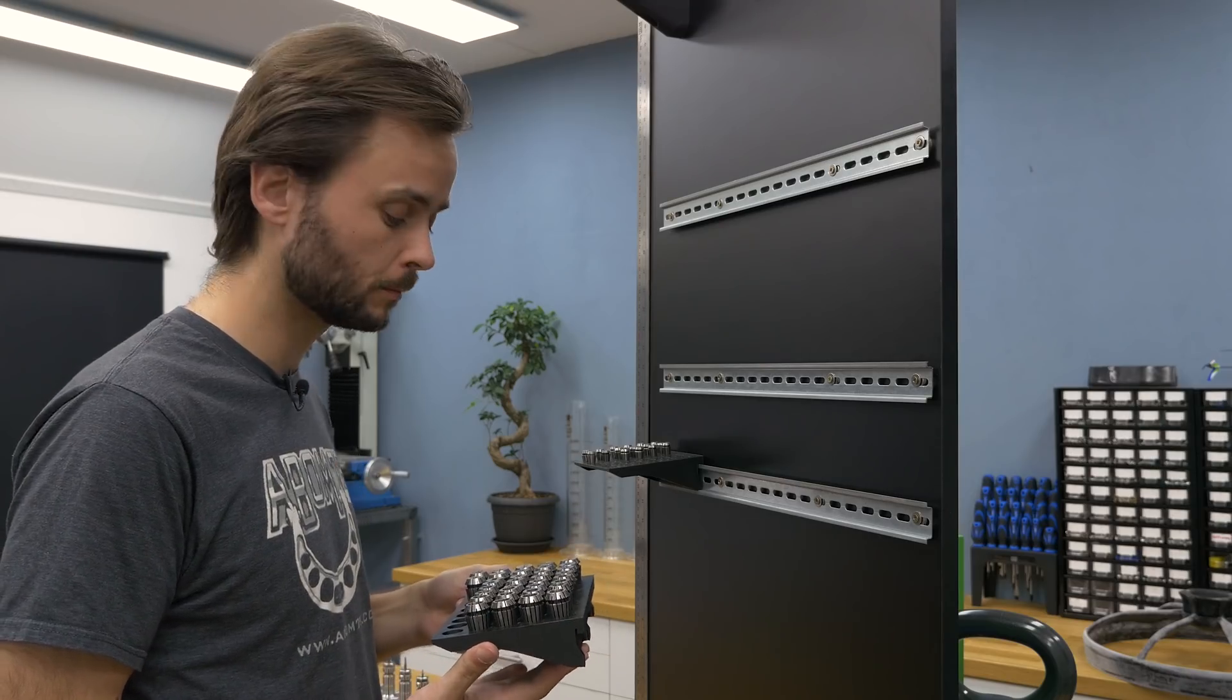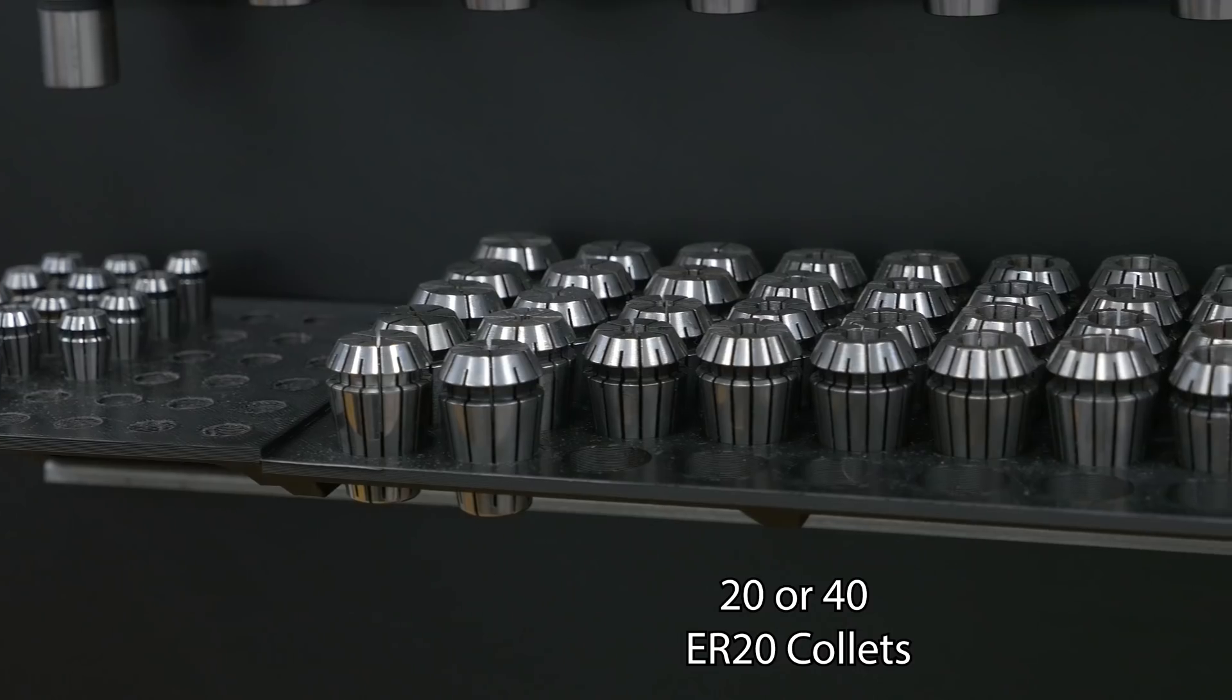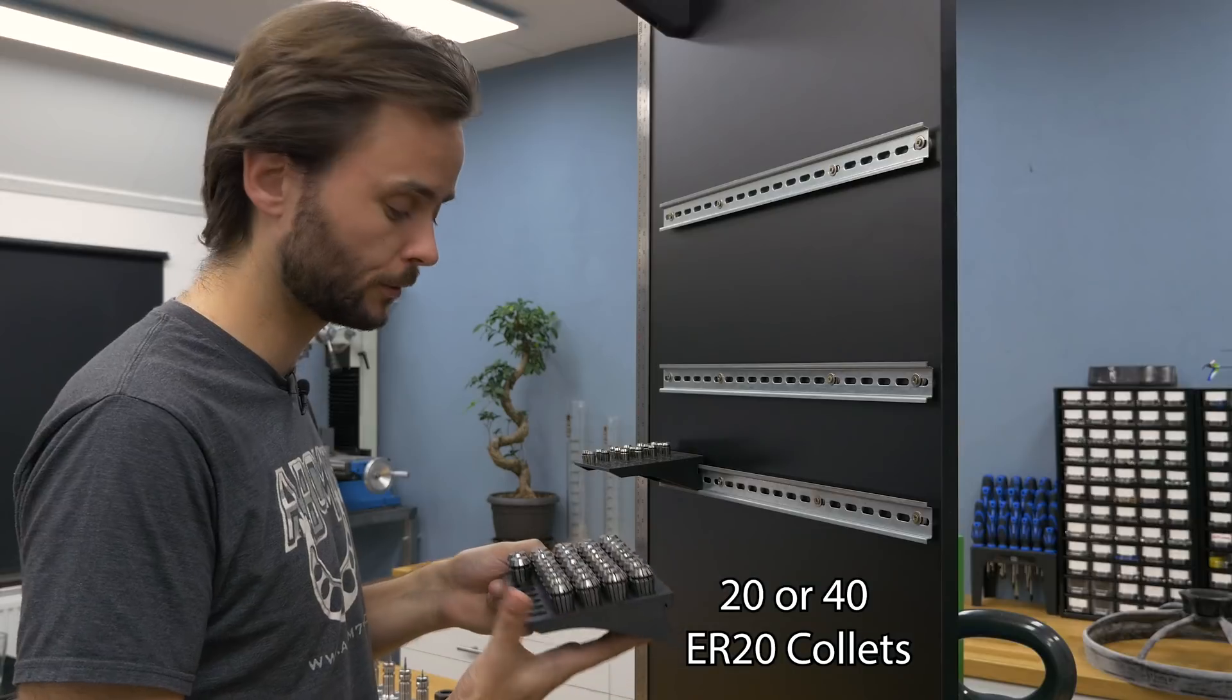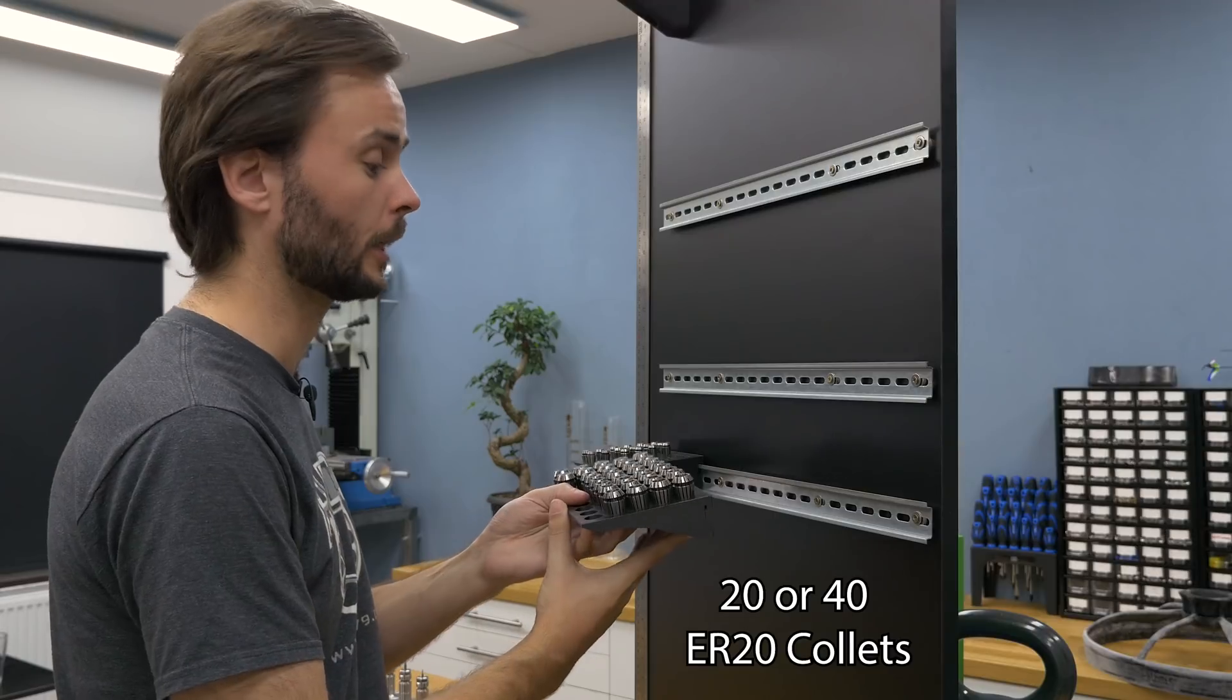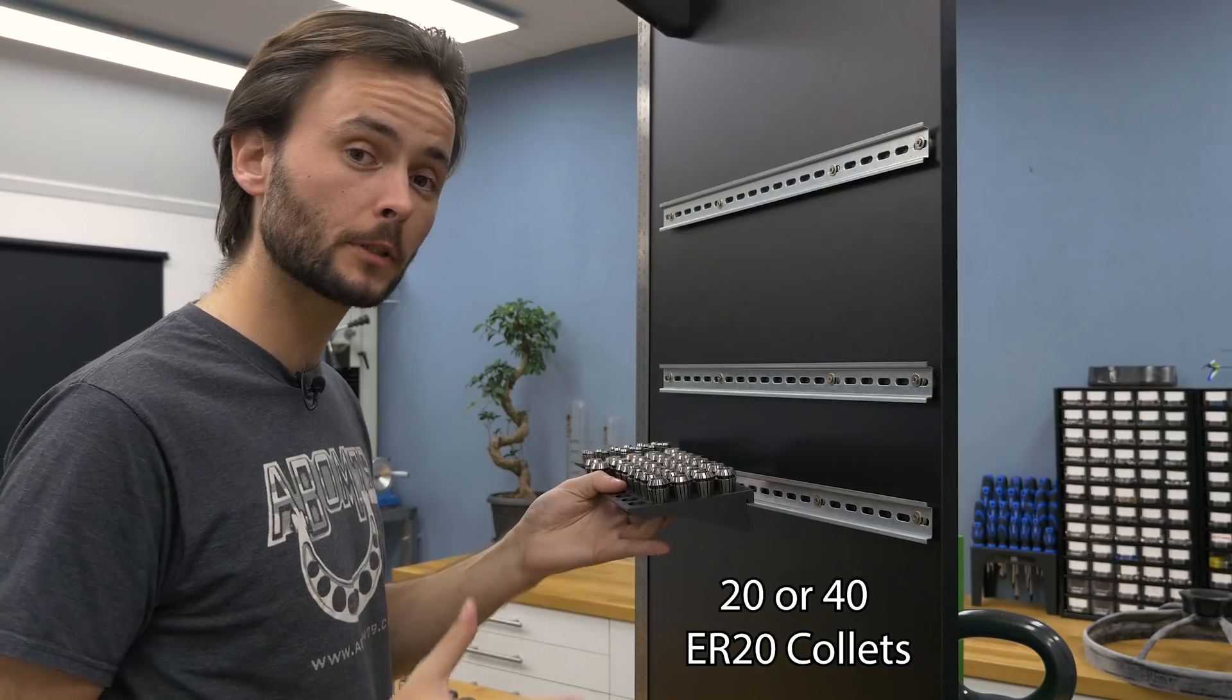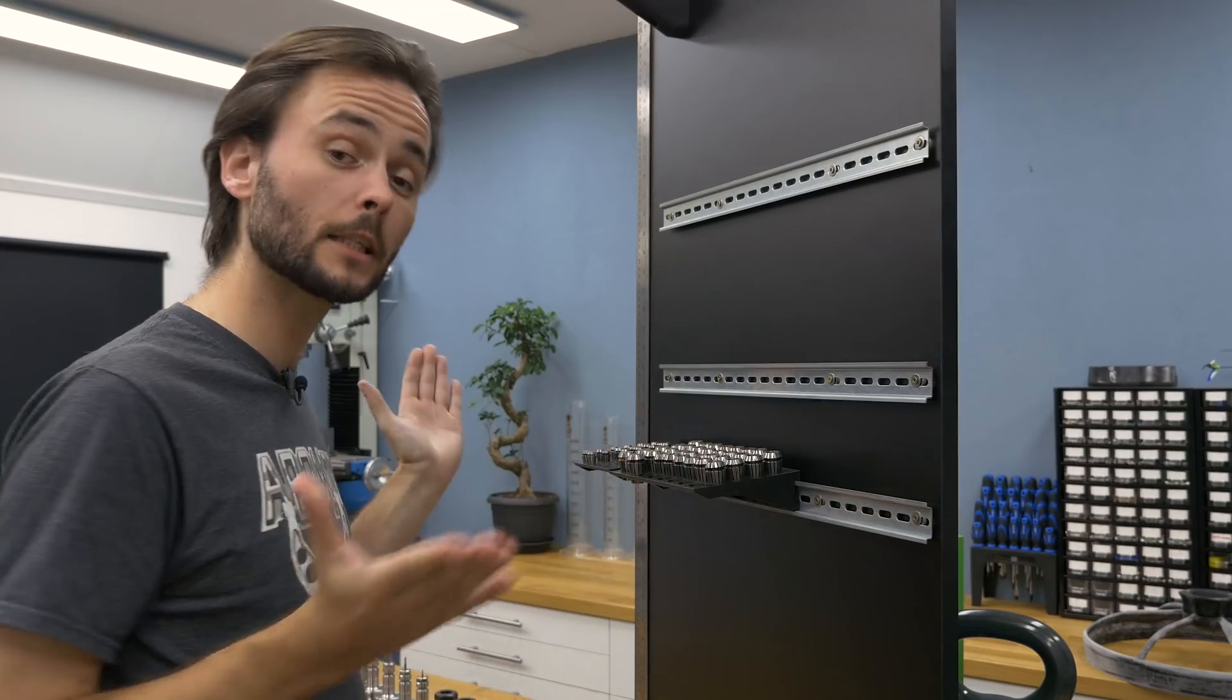So the second one I made is for ER20 collets. This one holds 40 collets. I also have a smaller one for 20 collets. But because I have quite a lot of these collets, I decided to make the larger one for myself. And just as with the previous one, it's really easy to just hang them on the rails.